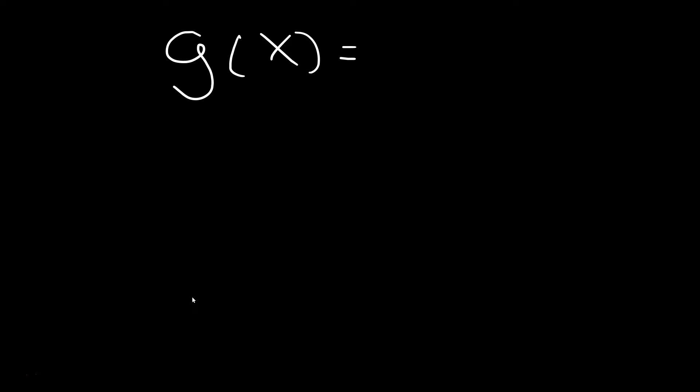Another example. So g of x is equal to the square root of x plus 4. Same logic. The inside function, we can call it u is x plus 4. The outside then gets written as g of u now, and then becomes the square root of u. That's the outside.